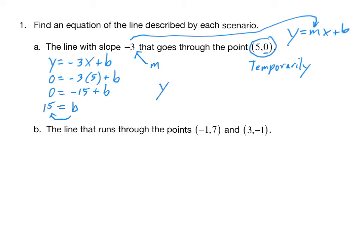We can write the equation of the line, which is of the form y = mx + b. So y = m is -3 times x plus b is specifically 15. This is the equation of the line that has slope -3 and passes through the point (5,0).